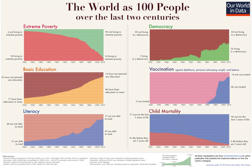Covering all of these aspects in one resource makes it possible to understand how the observed long-run trends are interlinked. The research on global development is presented to the audience of interested readers, journalists, academics, and policy people. The articles cross-reference each other to make it possible for the reader to learn about the drivers of the observed long-run trends.